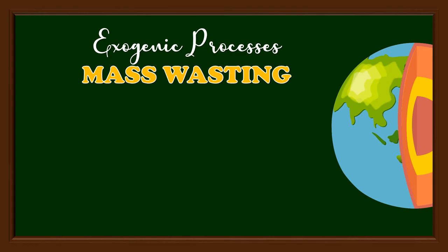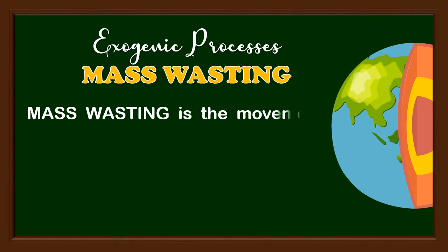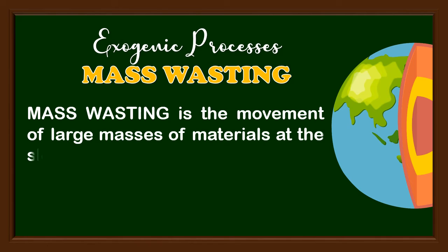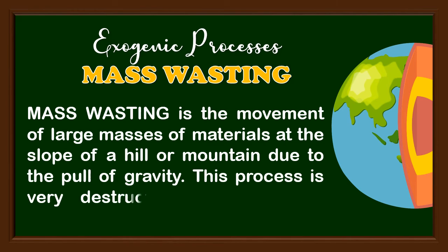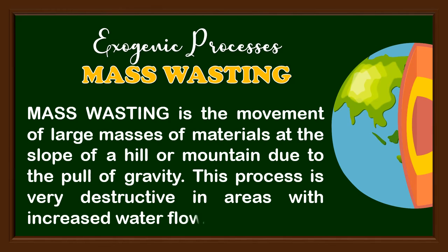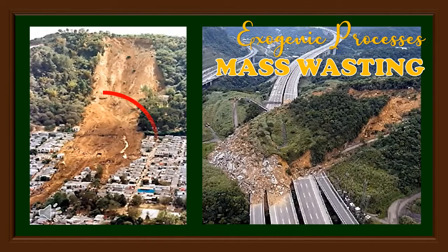The third type of exogenic process is mass wasting — the movement of large masses of materials at the slope of a hill or mountain due to the pull of gravity. This process is very destructive in areas with increased water flow. Examples of mass wasting can cause damage on a large scale, just like what happened in particular areas in the Philippines during the onslaught of a typhoon or strong storm.